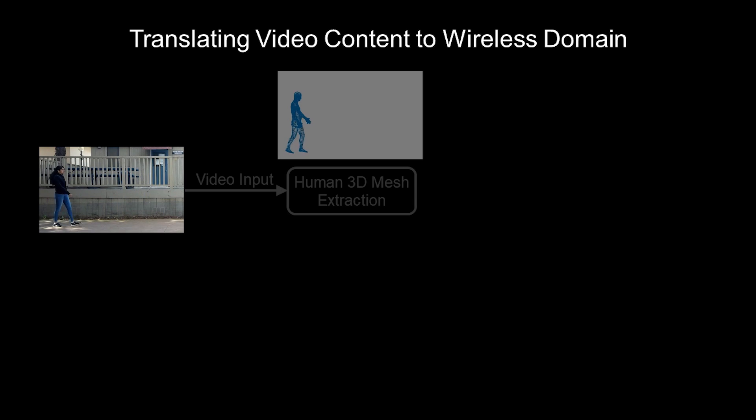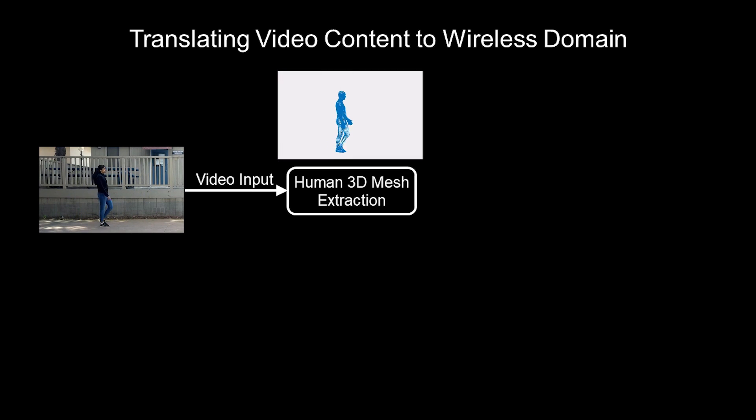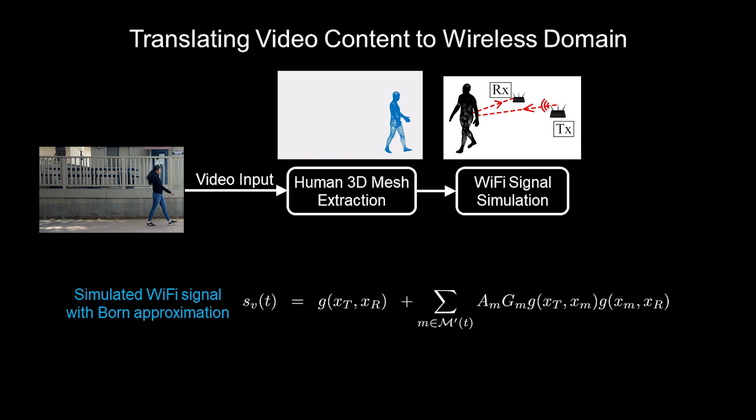We propose a way that for the first time can translate the video content to the wireless domain. Consider this video footage of a person. By using a human mesh recovery algorithm, we first extract the 3D mesh of the person. We then use Born electromagnetic wave approximation to simulate the RF signal that would have been generated if this person was walking in a Wi-Fi area.